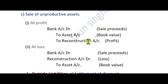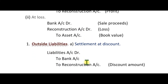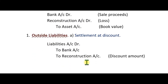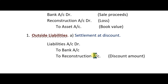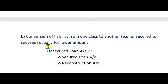For liabilities payment entries: Reconstruction Account debit and Bank Account debit to respective Assets Account. For liabilities, the benefit entry is: Liabilities debit to Bank. If you pay more, the loss is transferred to the Reconstruction Account.